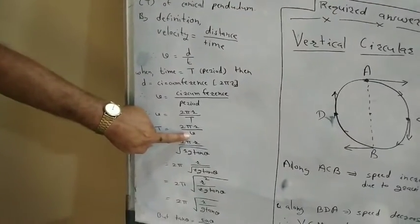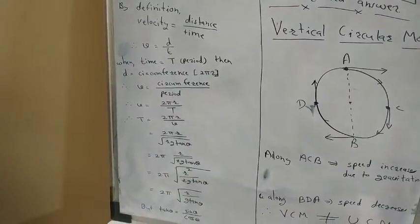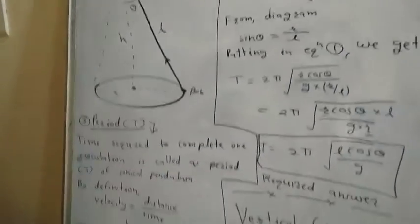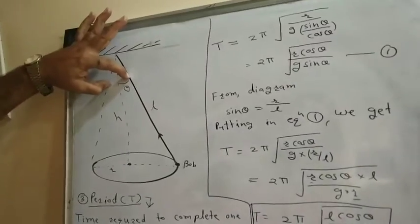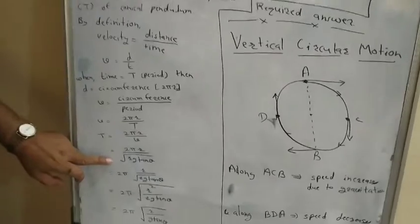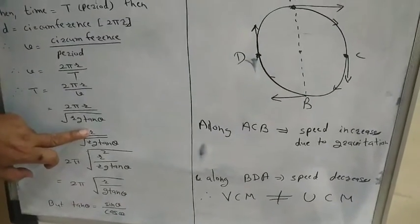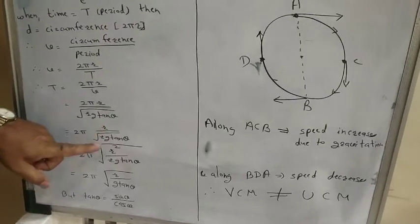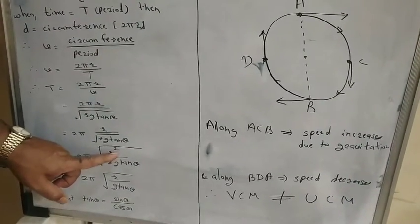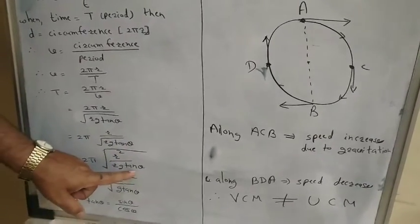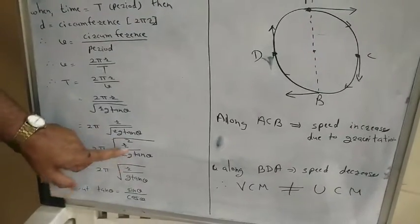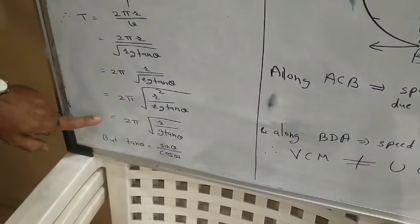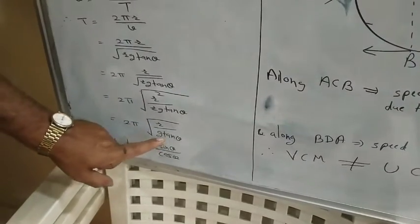In the previous lecture, we derived v = √(r·g·tan θ), where r is the radius of the circular orbit, g is gravitational acceleration, and θ is the semi-vertical angle. Substituting into T = 2πr / v, we get T = 2πr / √(r·g·tan θ). Simplifying, r² in the numerator under the root cancels one r from the denominator, giving T = 2π√(r / g·tan θ).